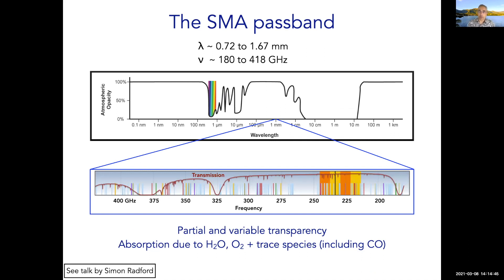Now we zoom into the region where the SMA works. It works at a very short range of wavelengths, 0.72 to 1.67 millimeters. In this schematic picture, it looks like the atmosphere is completely opaque. In fact, there are spaces where the atmosphere transmits maybe 80 or 90%. You actually can observe astronomical signals from the ground at around 230 gigahertz. This is the window where the SMA works most frequently, and also 345 gigahertz.